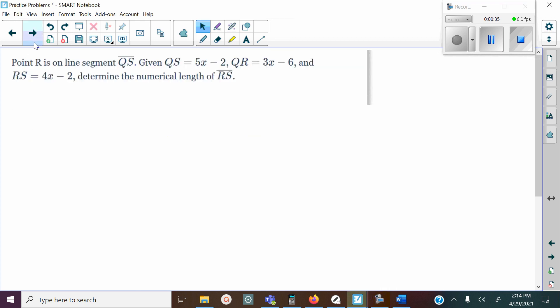Let's take a look at a couple examples. Here it says point R is on line segment QS. Given QS = 5x - 2, QR = 3x - 6, and RS = 4x - 2. Determine the numerical length of RS.